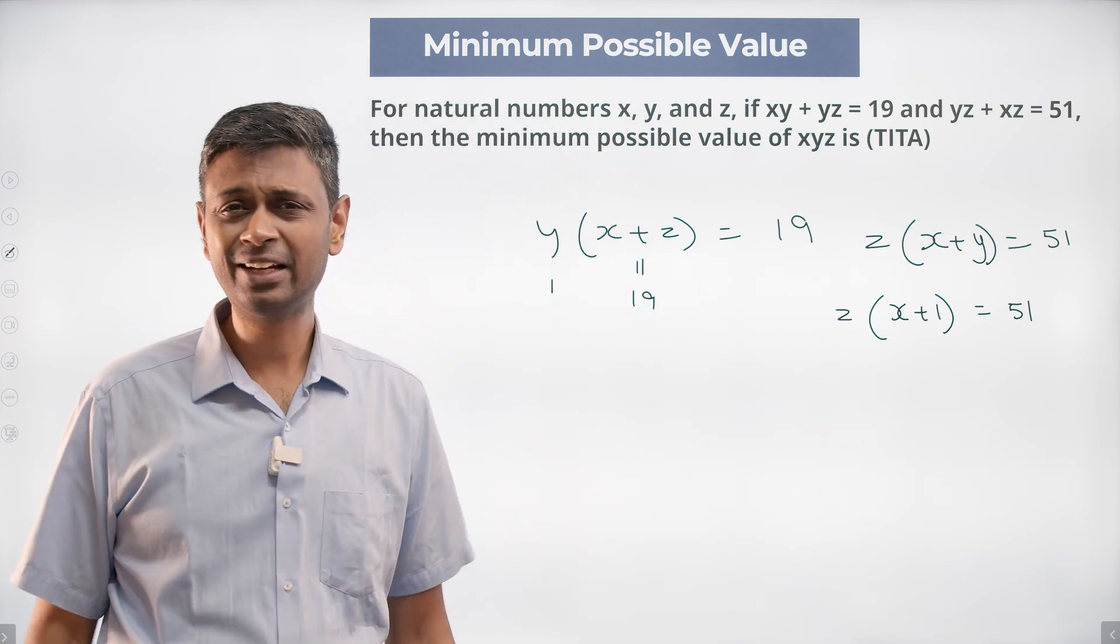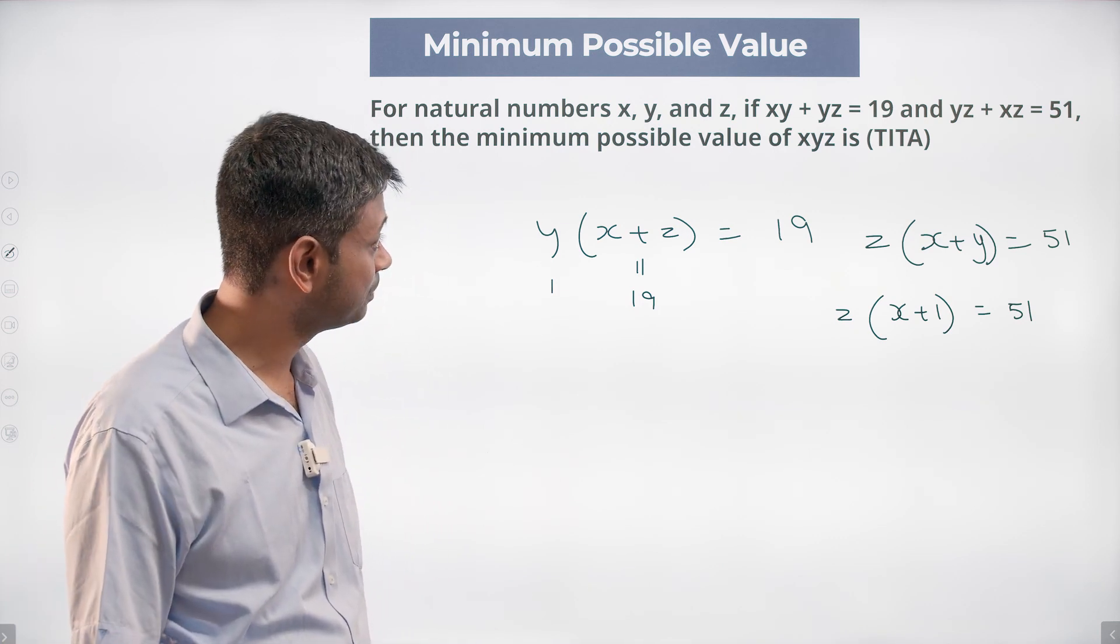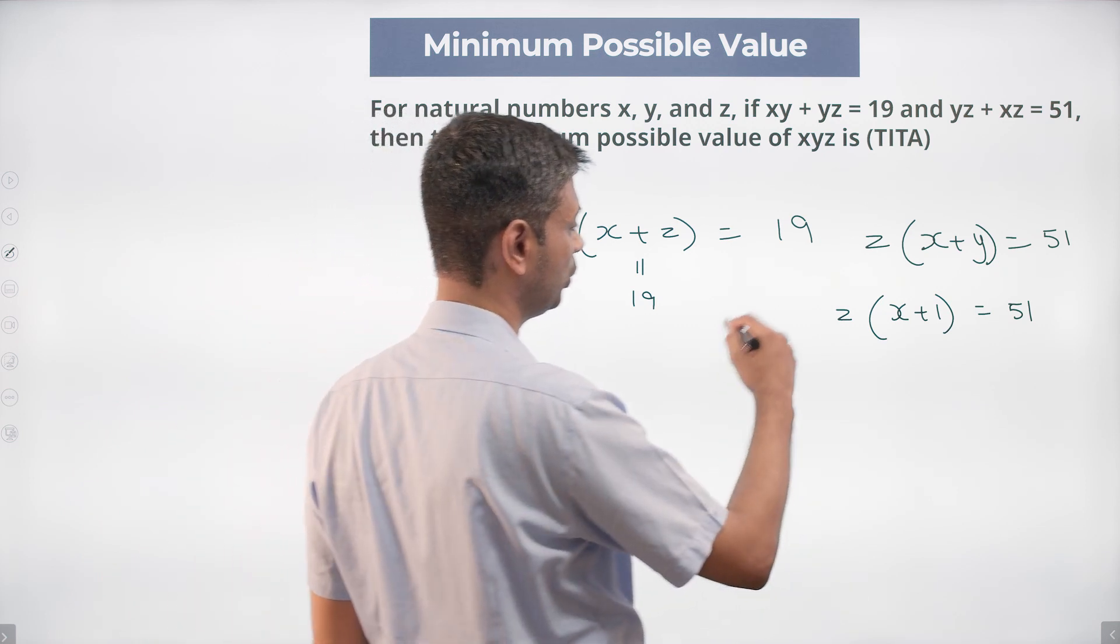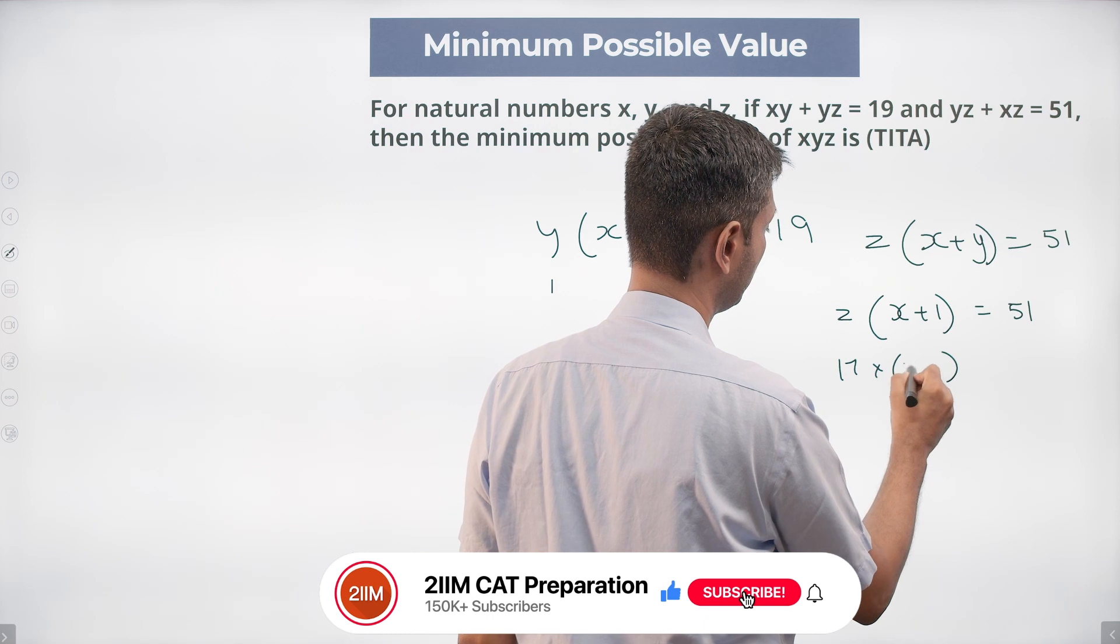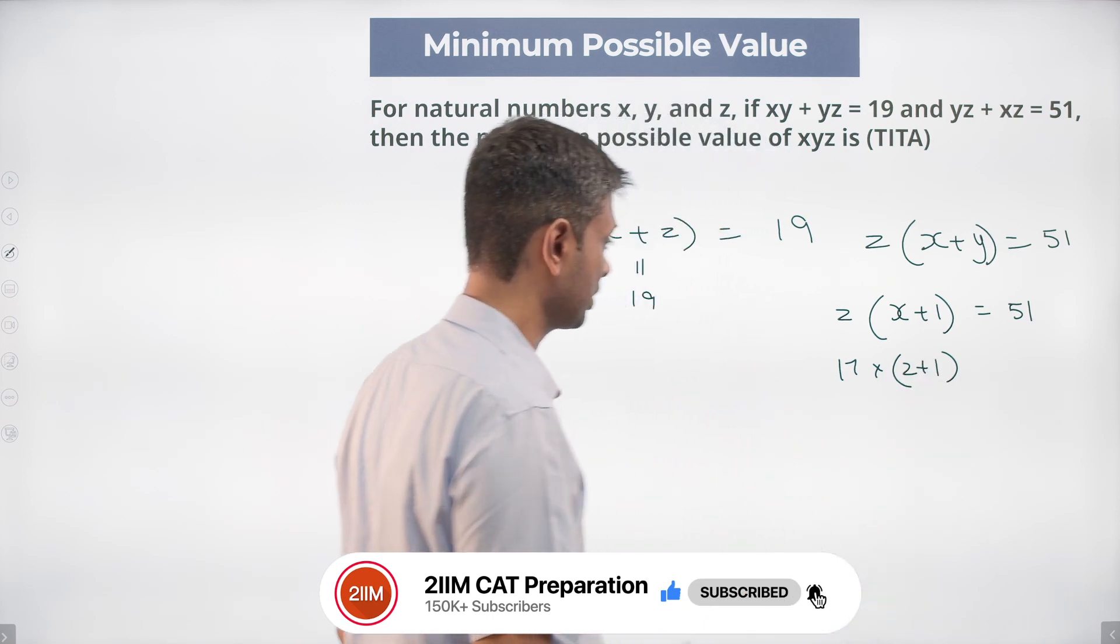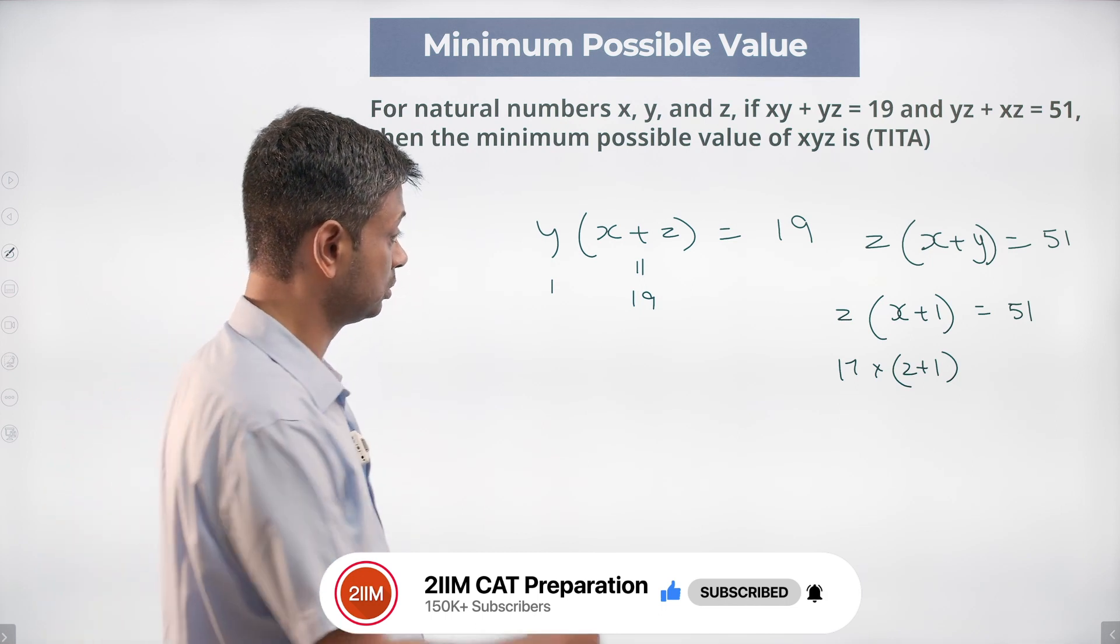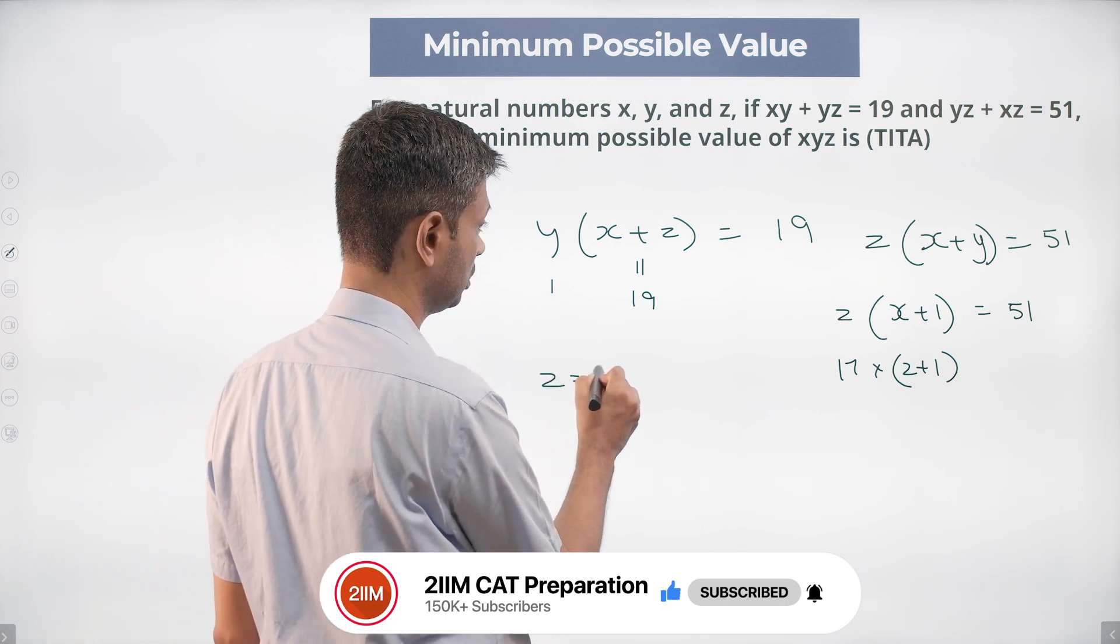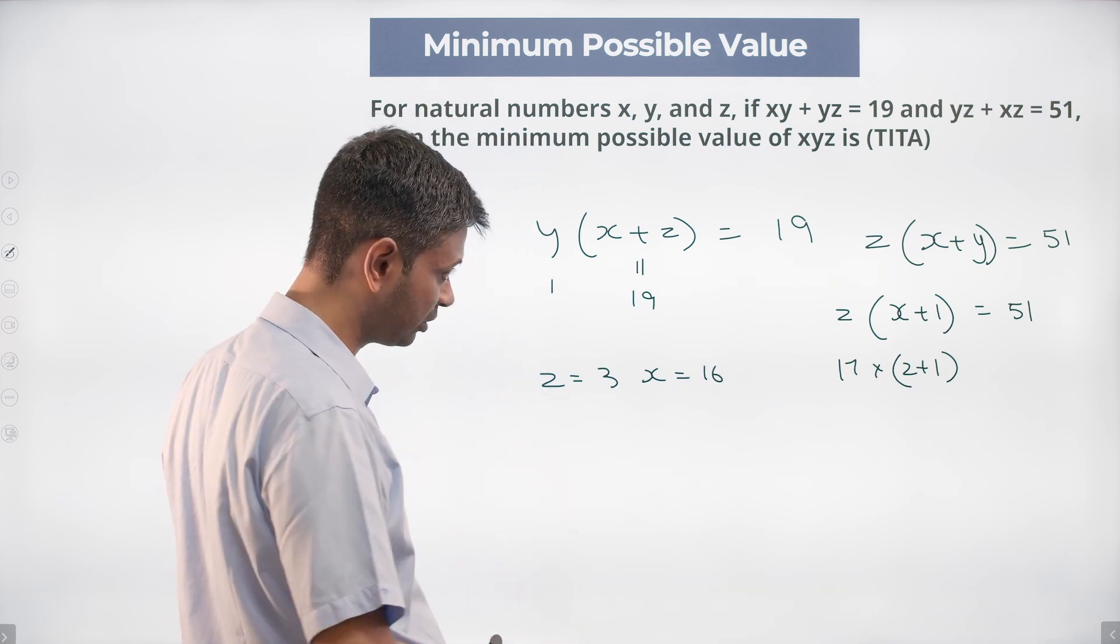3 into 17, 17 into 3. x plus z is 19, so z into (x+1). This could be 17 into (2+1). 17 plus 2 is 19, that works. You put z as 3, x equal to 16, then x plus z is 19. 3 into 17 also works.